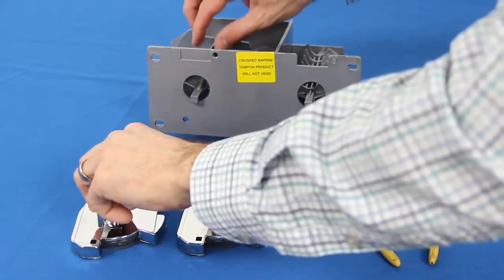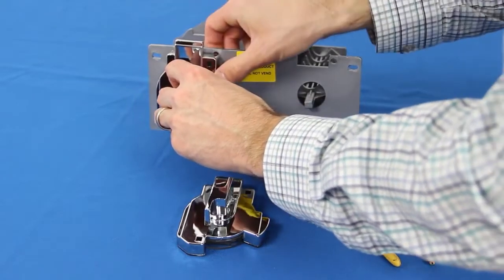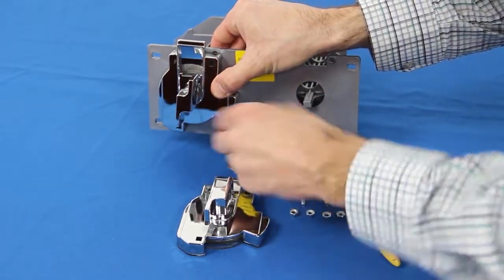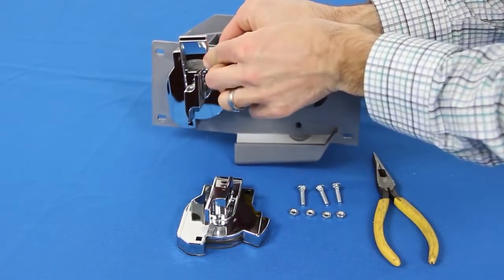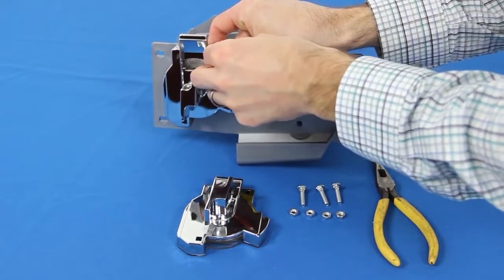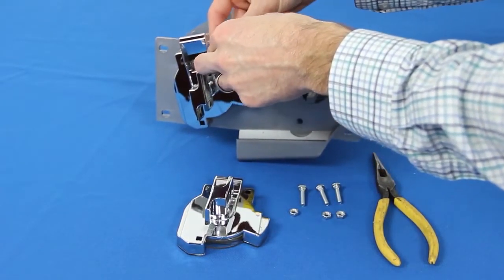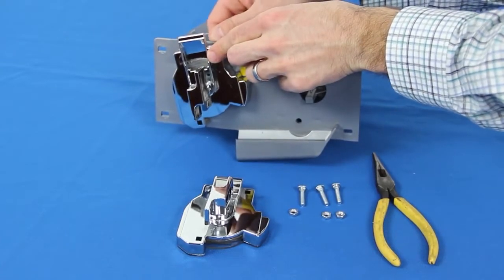Now you can install the new coin mechanism. To do so, fit the square peg into the square hole on the mechanism. Then insert the carriage bolts and secure with the nuts. For now, you only need to hand tighten them.